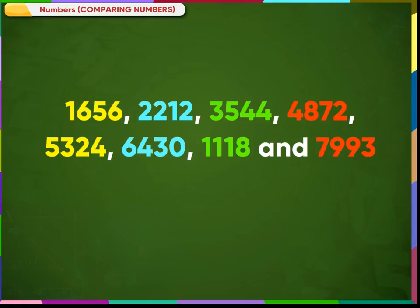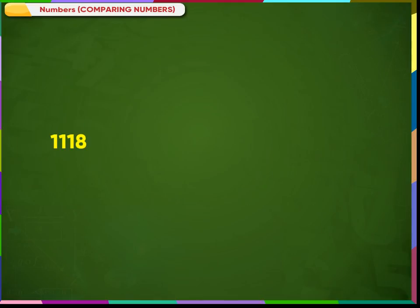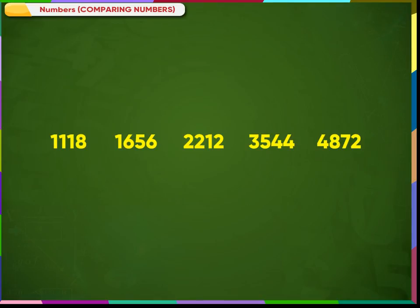Let us arrange these numbers: 1656, 2212, 3544, 4872, 5324, 6430, 1118, and 7993. We know that 1118 is the smallest. The next smaller number is 1656, then comes 2212, then 3544, then 4872, then 5324, then 6430, and finally 7993 is the largest number in the given numbers.